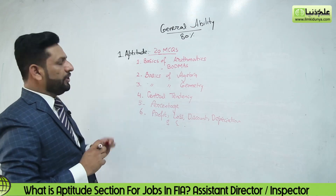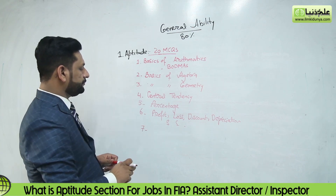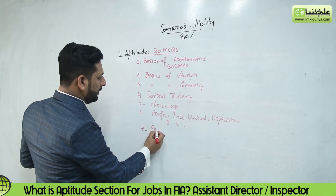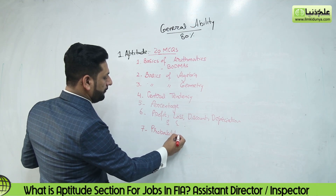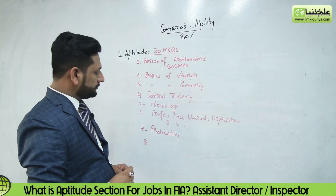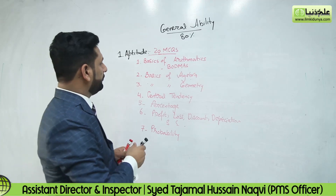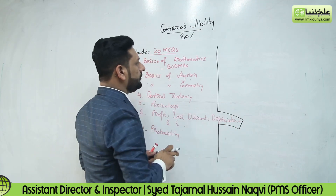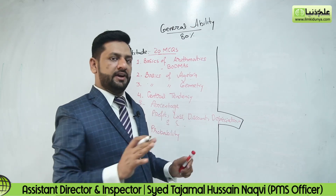Number 7 will be Probability. Number 8 and there are many more things. These are the portions that you have to learn from childhood. You can write a formula in your mind — the formulas you have to learn from childhood, and that's completely okay.